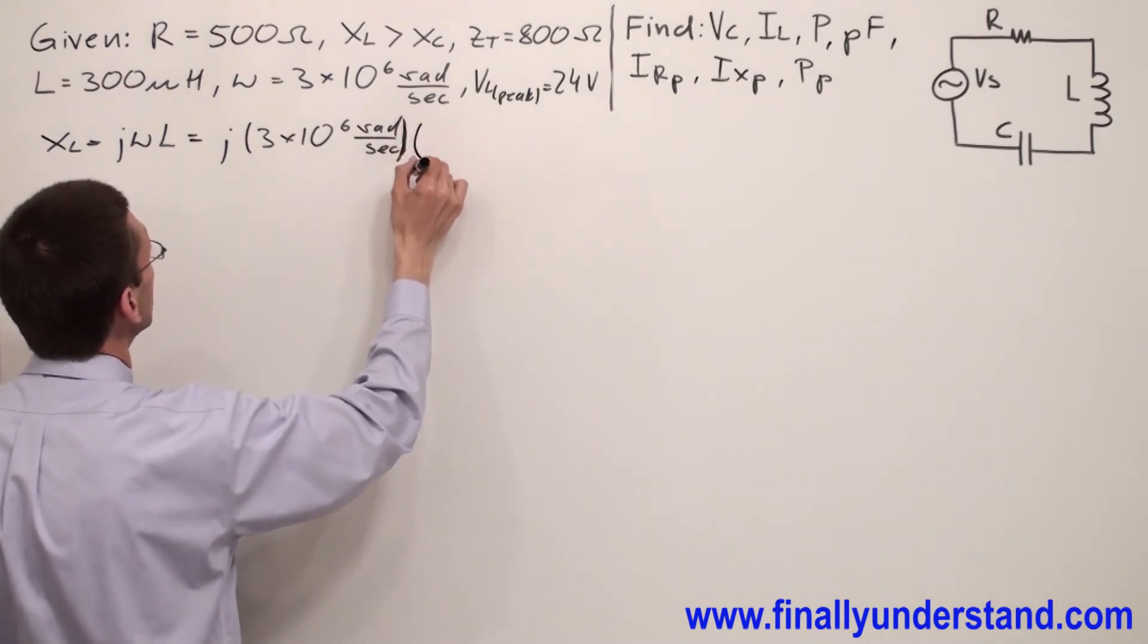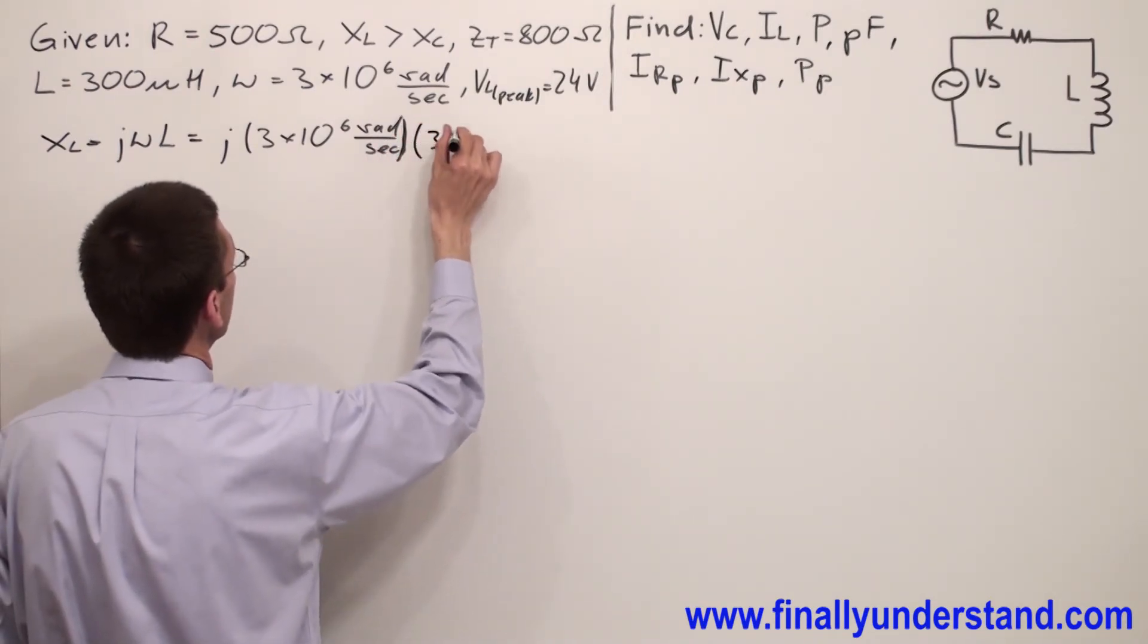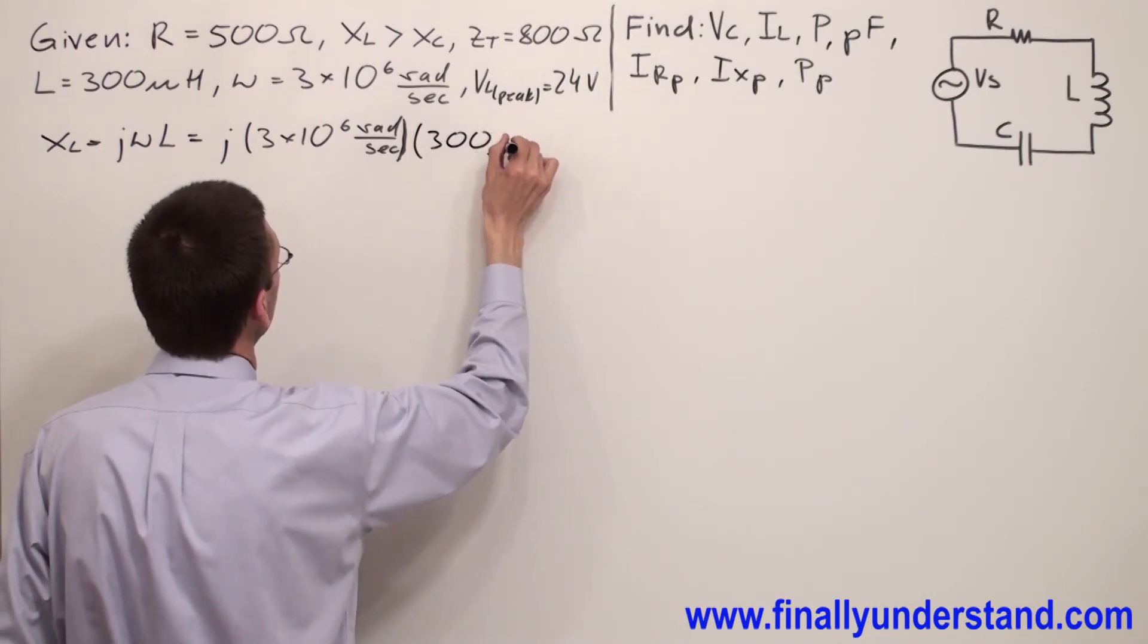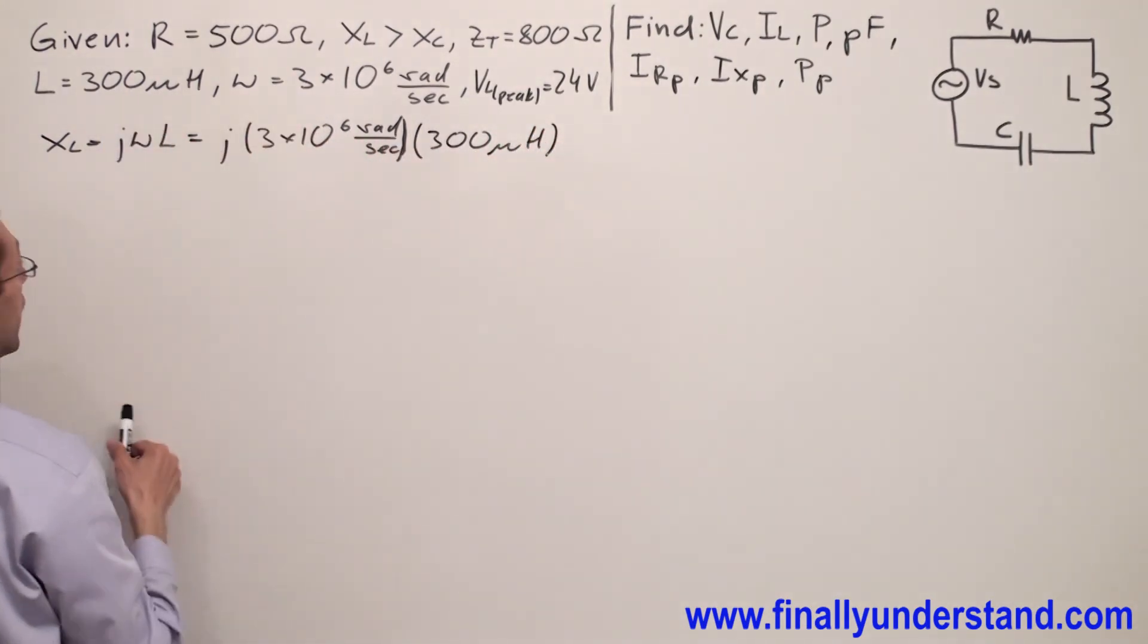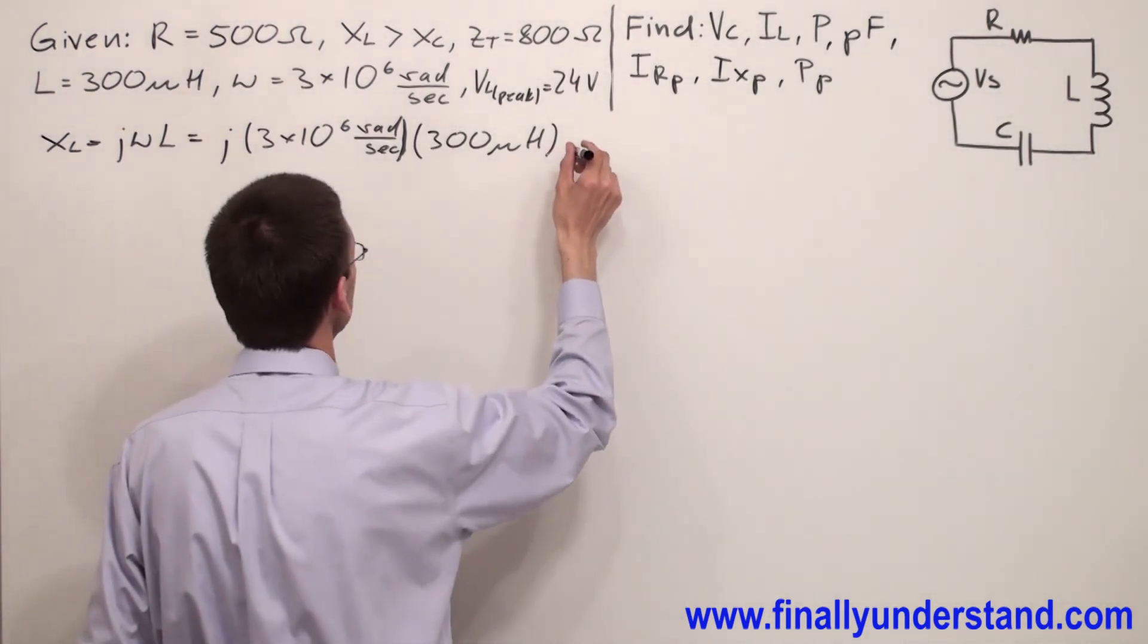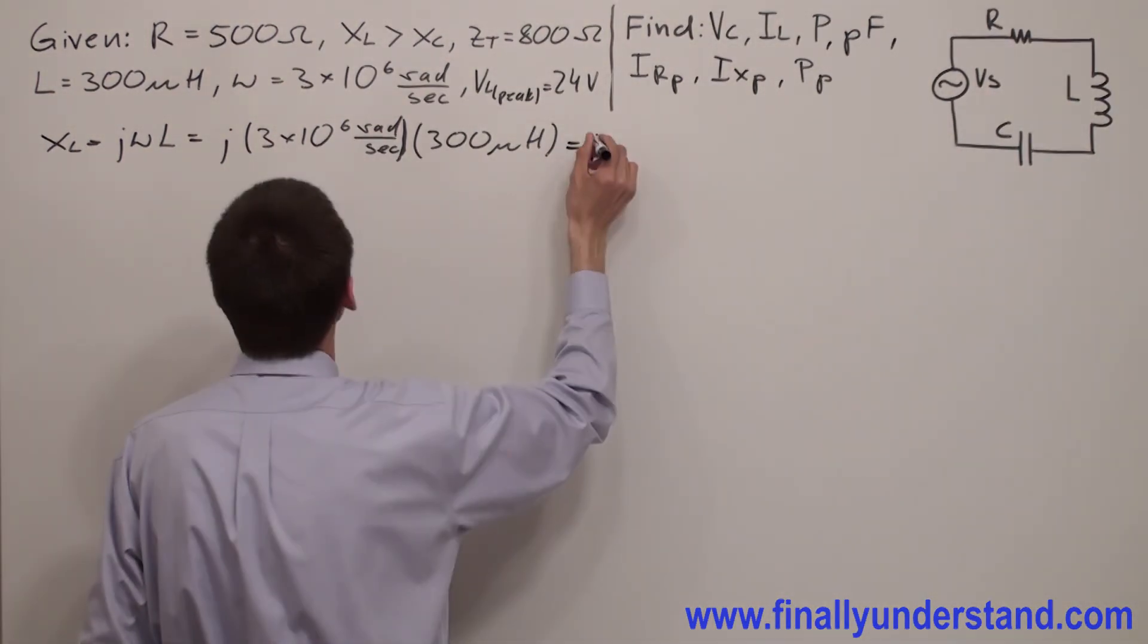times 300 microhenries. So I have omega times my inductance, this is equal to j...